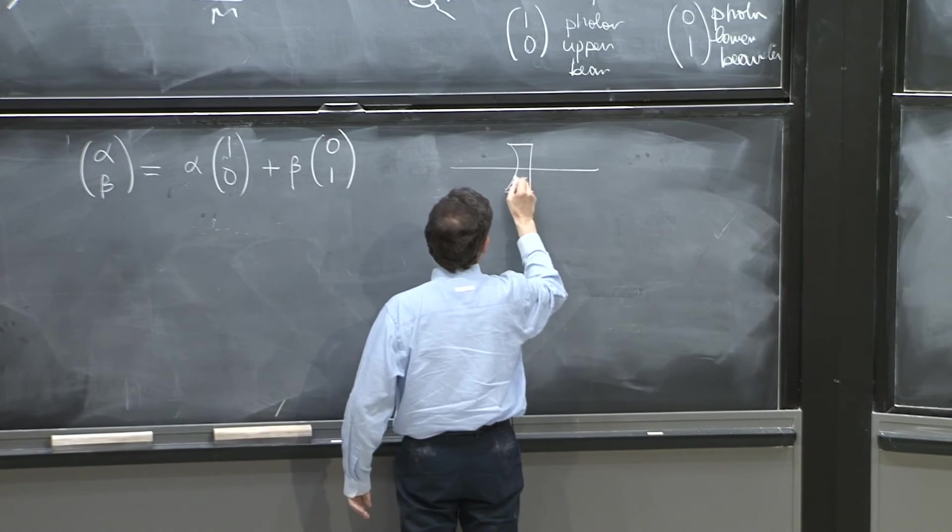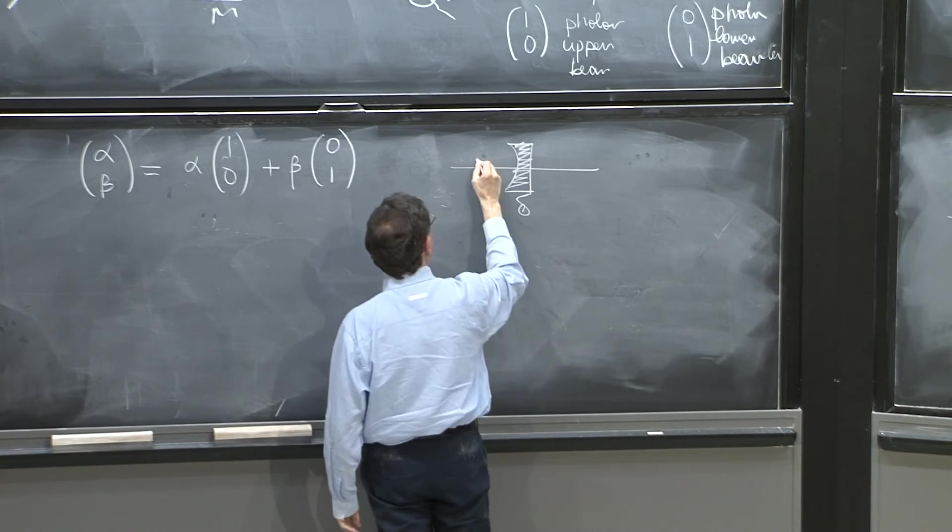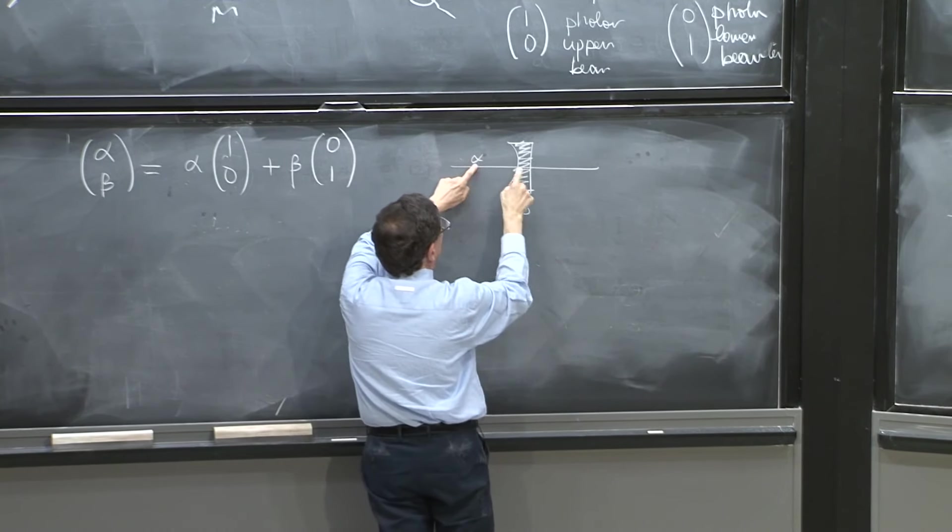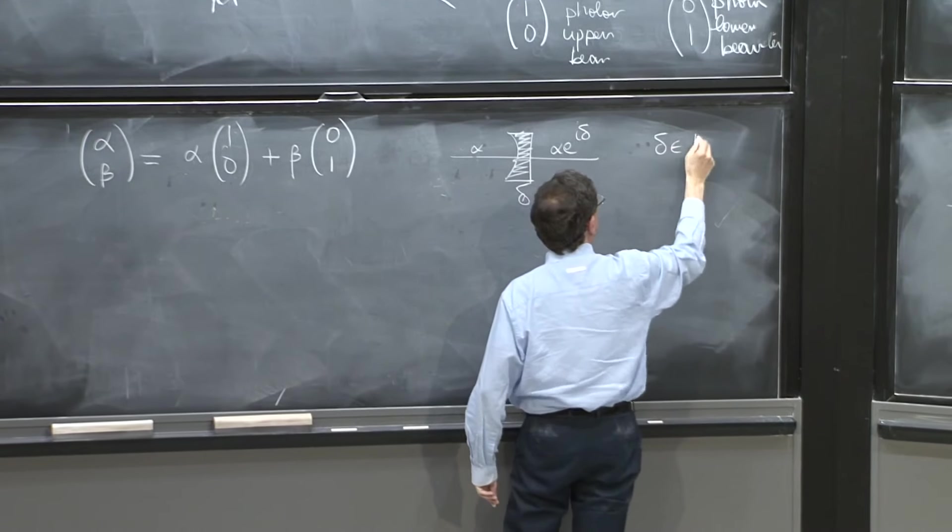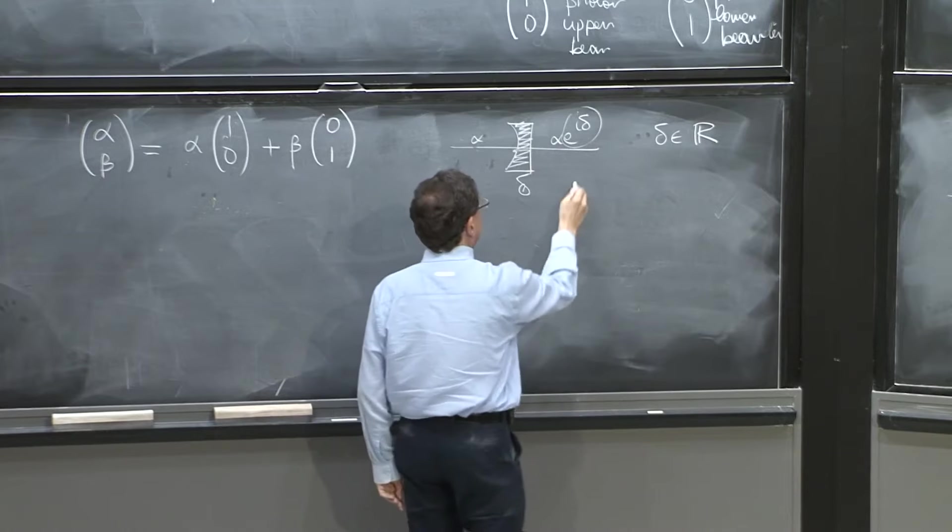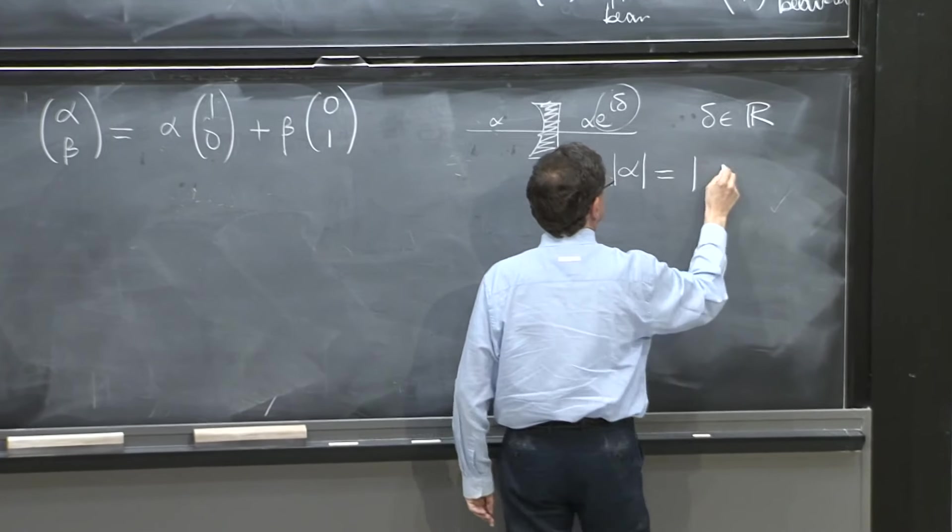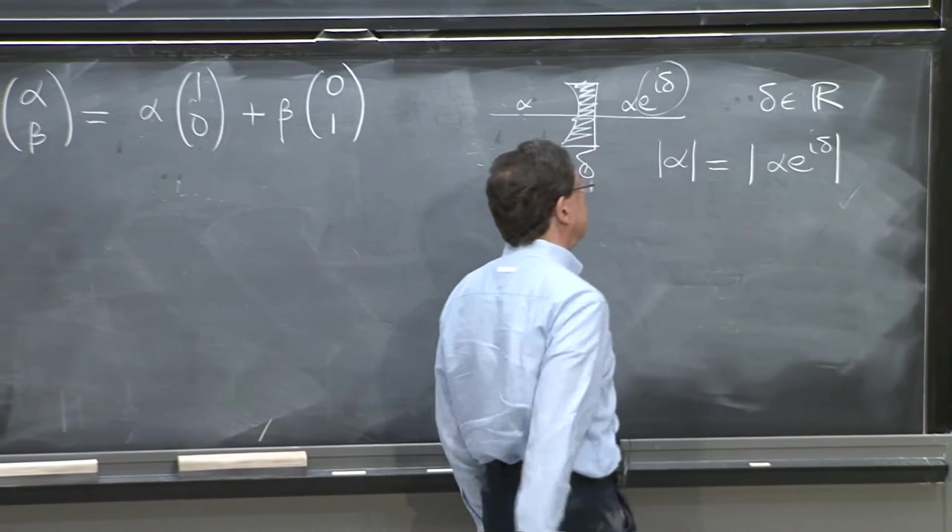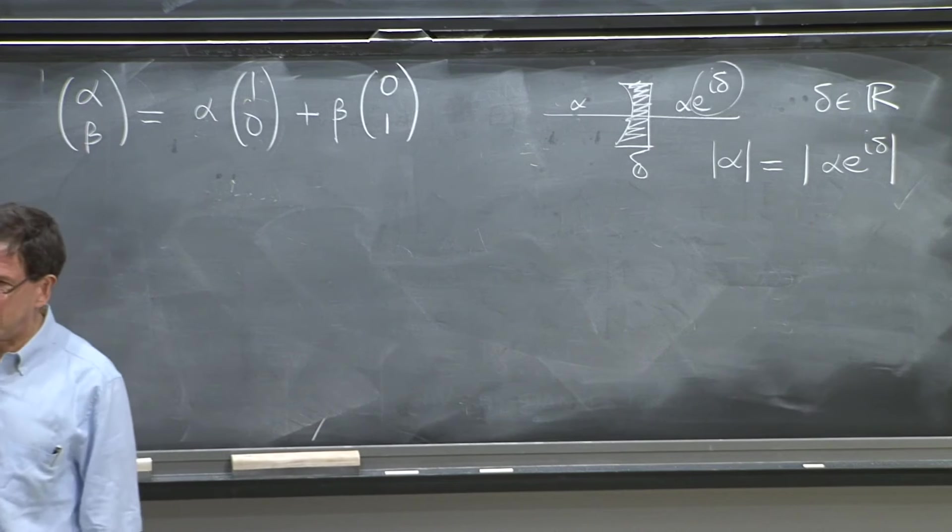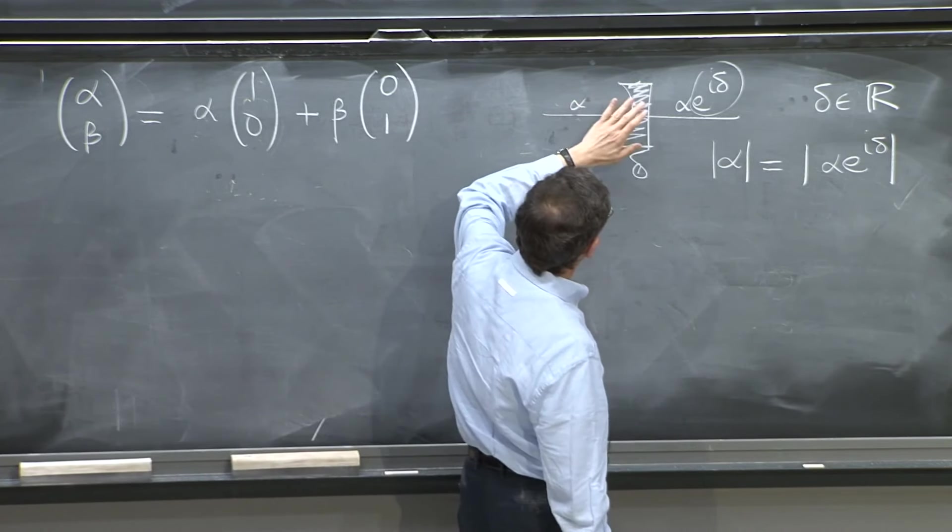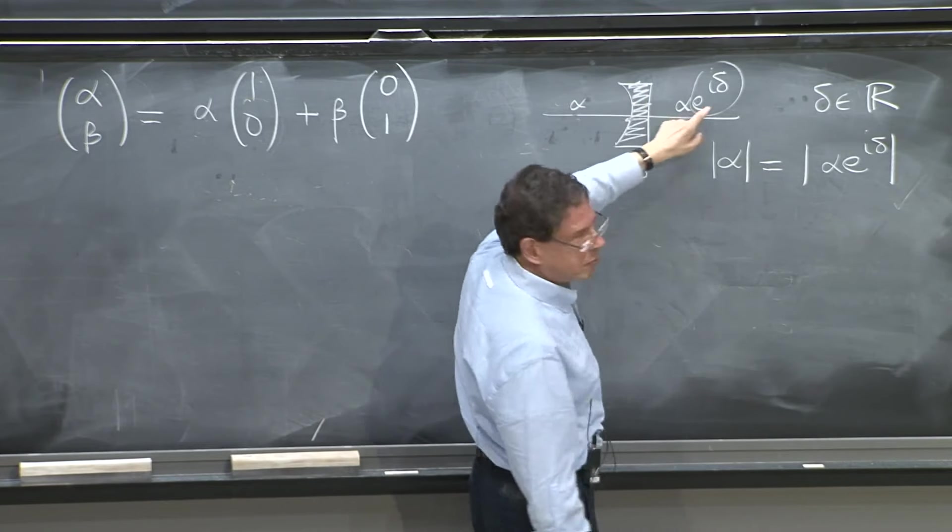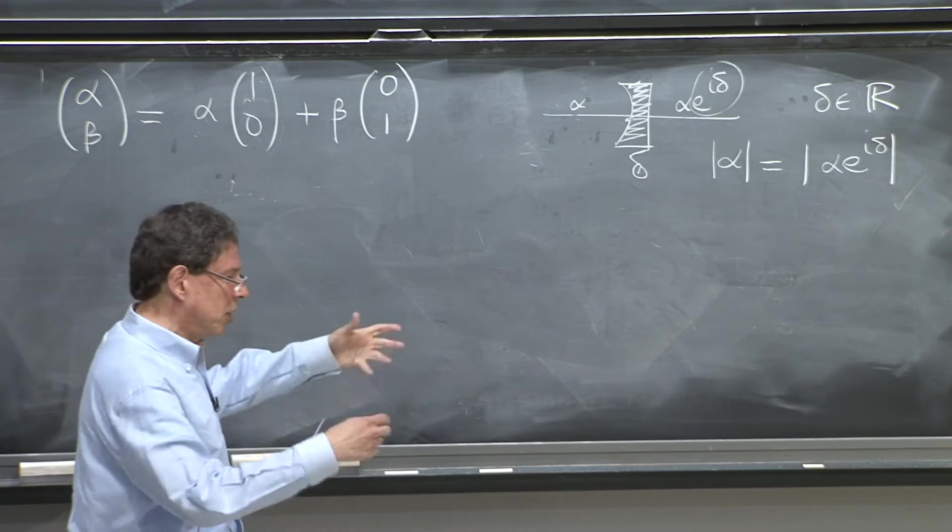We also had this little device, which is called the beam splitter of phase delta. If the probability amplitude is alpha to the left of it, it's alpha e^(i*delta) to the right of it, with delta a real number. So this is a pure phase. And notice that |alpha| equals |e^(i*delta)|. The norm of a complex number doesn't change when you multiply it by a phase. The norm of a complex number times a phase is the norm of the complex number times the norm of the phase. And the norm of any phase is 1. So actually, this doesn't absorb the photon. It doesn't generate more photons. It preserves the probability of having a photon there, but it changes the phase.